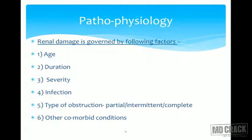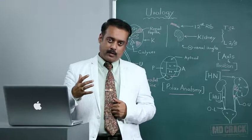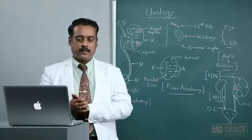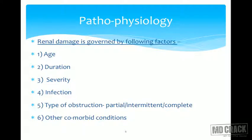Renal damage in hydronephrosis is governed by several factors. First is age — the older the patient at exposure, the lesser the prognosis. Duration: a more prolonged insult causes more damage. Severity: depending on the level of obstruction — at the PUJ or ureterovesical junction — the magnitude of hydronephrosis varies. Infection: concomitant urinary tract infection complicates the situation. Type of obstruction — partial, intermittent, or complete — determines how hydronephrosis progresses. Lastly, comorbid factors such as malignancy or other entities in the urogenital tract.